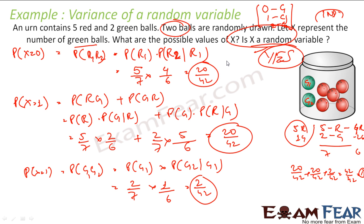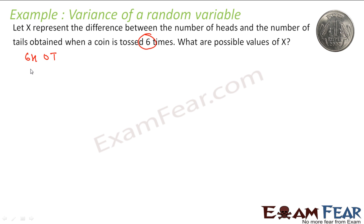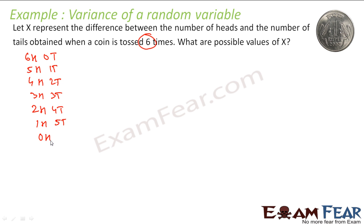The trick here was that it is not an independent event, so you have to take care of this. The next question says: let x represent the difference between the number of heads and number of tails obtained when a coin is tossed 6 times. Find the possible values of x. Tossing 6 times can give: 6 heads 0 tails, 5 heads 1 tail, 4 heads 2 tails, 3 heads 3 tails, 2 heads 4 tails, 1 head 5 tails, or 0 heads 6 tails.